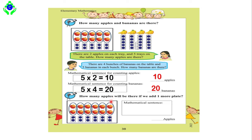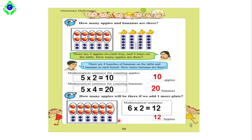At the bottom of the page there is another question: how many apples will there be if we add one more plate? At first there were five plates, but now with one more there are six plates. Each plate has two apples, so the mathematical sentence is six into two, which equals twelve. The answer is twelve apples. To summarize: first question — ten apples; second question — twenty bananas; third question — twelve apples.